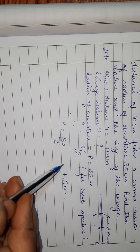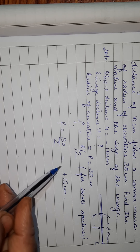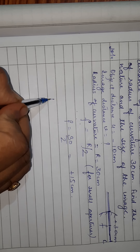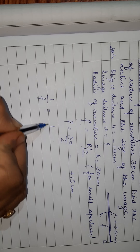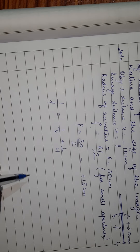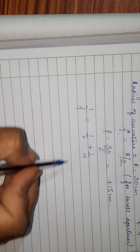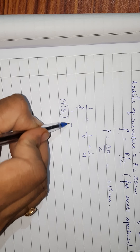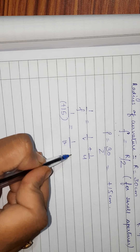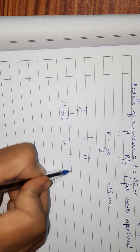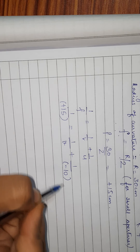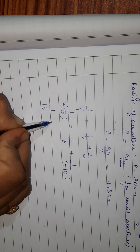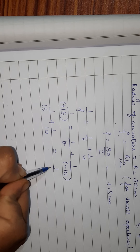Using mirror formula: 1 upon F equals 1 upon V plus 1 upon U. F is plus 15, U is minus 10. So 1 upon 15 equals 1 upon V plus 1 upon minus 10. Transposing: 1 upon 15 plus 1 upon 10 equals 1 upon V.